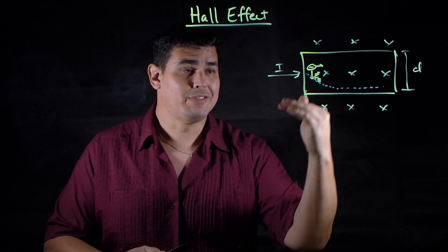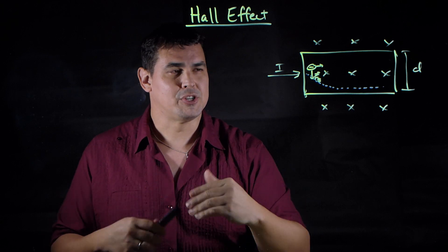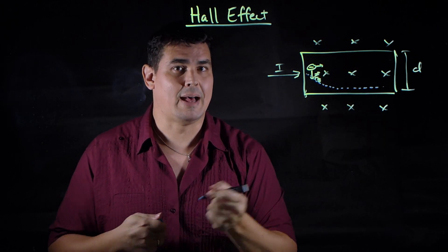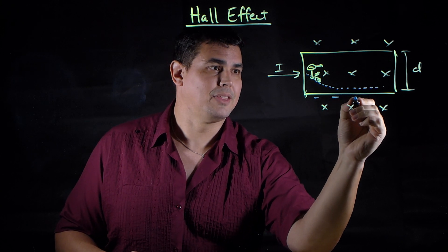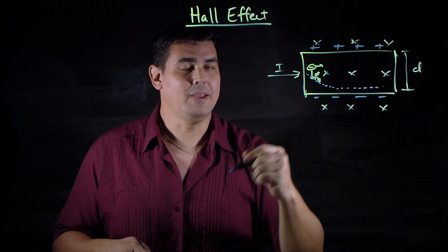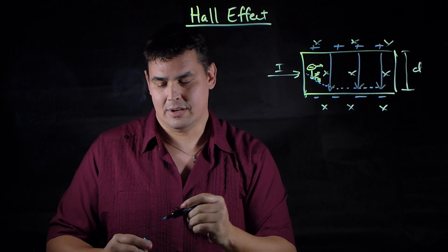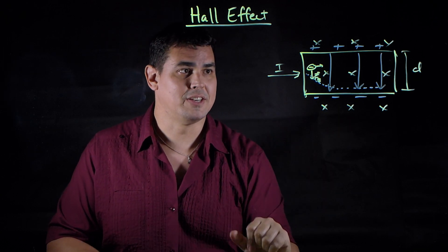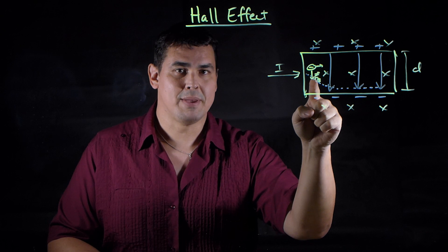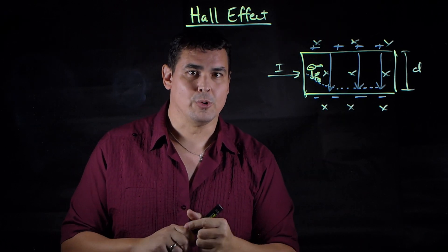If you shove negative charges down to the other side, that's going to set up an electric field because you have this separation of charge. If I move all the negatives down here, you're going to be left with positive on the top. So I'll end up with negative charges down here and positive up here, and that sets up an electric field. So now I have this electric field in this conductor, and these electrons moving through get pushed down to the bottom by the magnetic force, but now there's also an electric force.